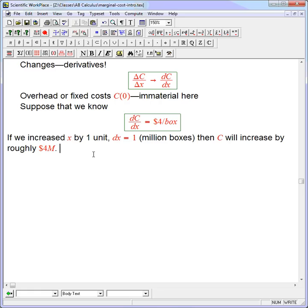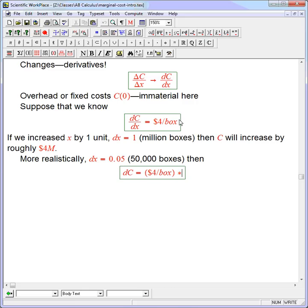More realistically, we might have dx equals, let's say, 50,000 boxes, a 5% increase. Then it's probably going to be a good approximation. Then I just solve this: it's $4 per box, my marginal cost, times dx. But I now know dx. I'm just going to leave the units out for a second: 4 times 0.05 is 0.2, or in other words $200,000.